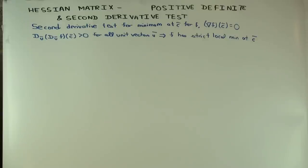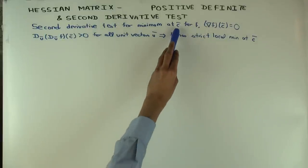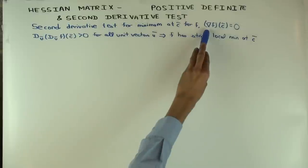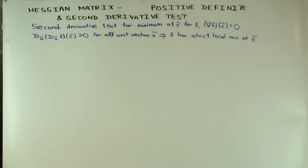We have a scalar-valued function f of a vector variable, which I'll usually call x. Now there's a point c in the domain, and let's say the gradient vector of f at c is zero — so all the partials of f at c are zero, and the gradient vector exists and equals zero.